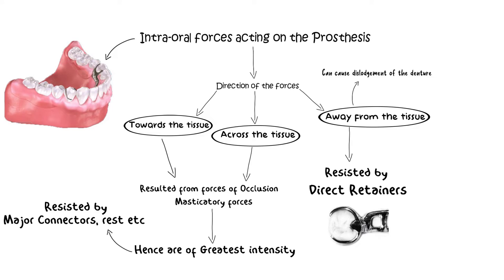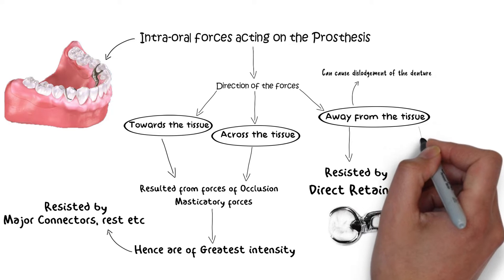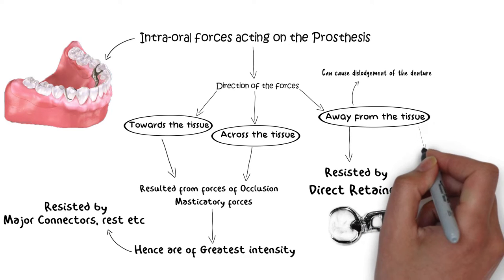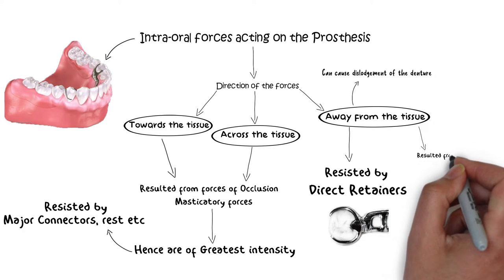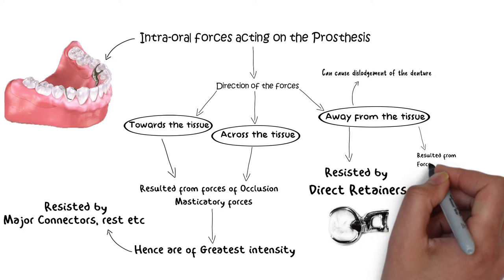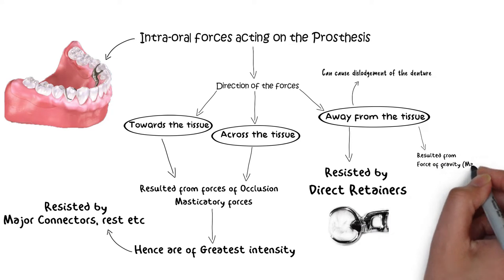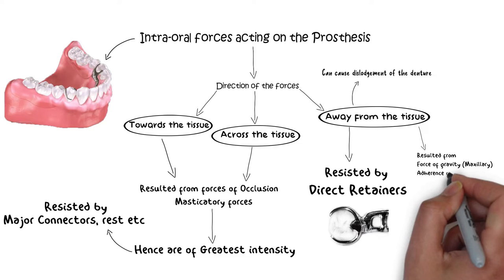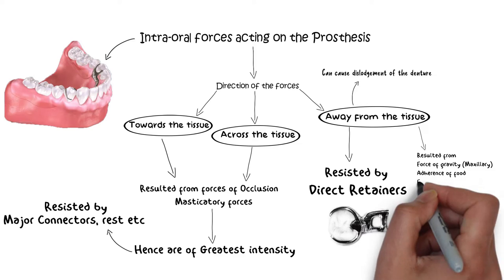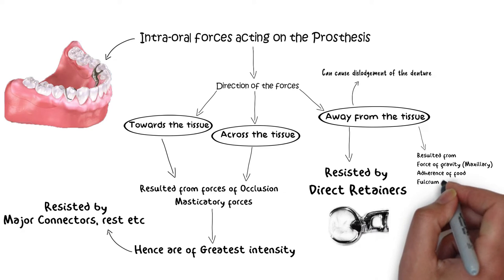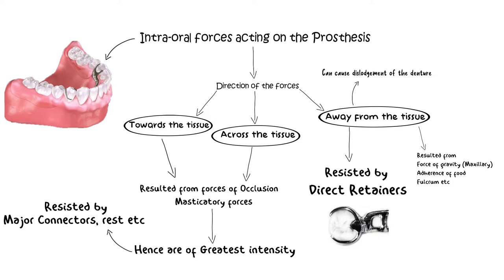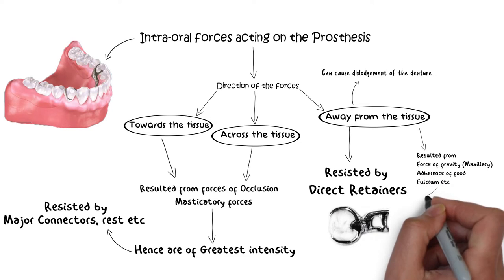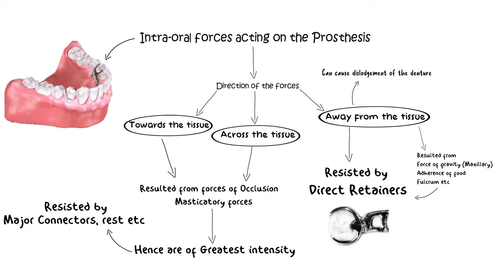These forces that act away from the tissue include the forces of gravity for the maxillary denture, the relative stickiness or adherence of food when chewing, opening and closing the mouth, and other forces that act across the fulcrum to unseat the prosthesis. For more on the concept of retention, you can watch the video on the basics of retention for a more detailed overview.